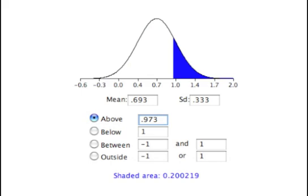Using the values just calculated, the problem is pretty easy. We have a normal distribution with a mean of 0.693 and a standard deviation of 0.333. We just have to figure out the probability of obtaining a value of 0.973 or higher. The answer can be found directly from the normal calculator. As you can see, it is 0.20.